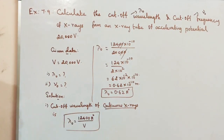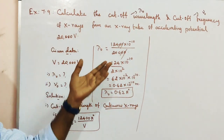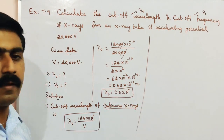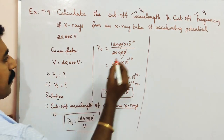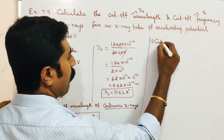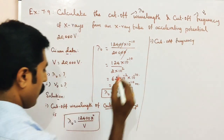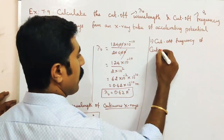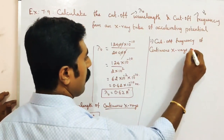The SI unit of the result is meters. Now for Part 2: Cutoff frequency of continuous X-rays.